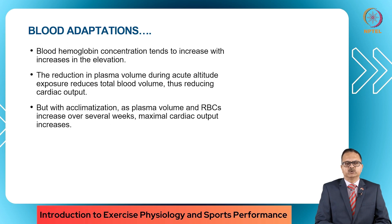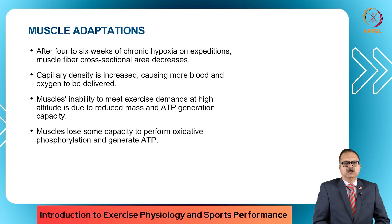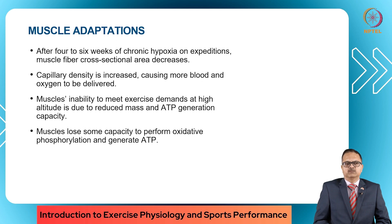The reduction in plasma volume during acute altitude exposure reduces total blood volume, reducing cardiac output. But with acclimatization, as plasma volume and RBCs increase over several weeks to months, maximal cardiac output increases. After four to six weeks of chronic hypoxia, muscle fiber cross-sectional area reduces, while capillary density increases, causing more blood and oxygen to be delivered. The muscles' inability to meet high exercise demands at altitude is due to reduced mass and reduced ATP generation capacity.